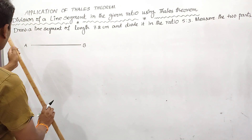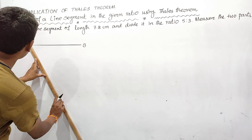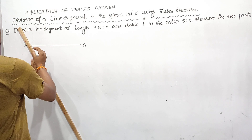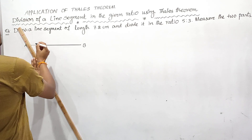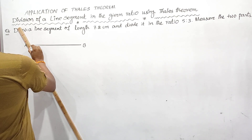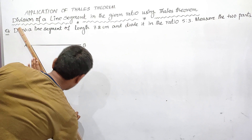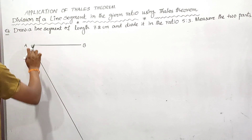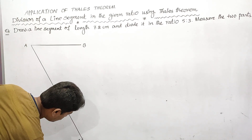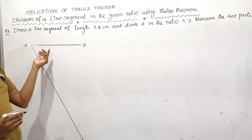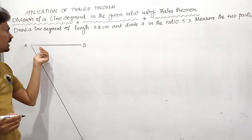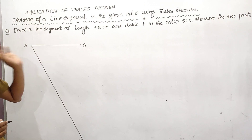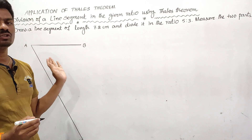In the second step, draw a ray AX. From the point A we have to draw a ray AX, but there is a condition: angle BAX should be an acute angle. An acute angle is an angle which lies between 0 degrees and 90 degrees. So we have to draw ray AX such that angle BAX is an acute angle.